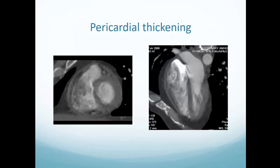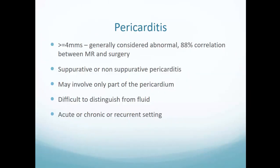A thickened pericardium looks like a blunt pencil drawing around the heart rather than a sharp pointed line. If it's four millimeters or more, we consider that thickened. In the context of chest pain where a coronary angiogram is normal, a CT may show thickened pericardium — this may be part of exudative or non-exudative pericarditis, but you can't really distinguish between the two. It may not involve the whole pericardium. On CT it can be difficult to distinguish thickening from pericardial fluid when it's only mildly thickened.